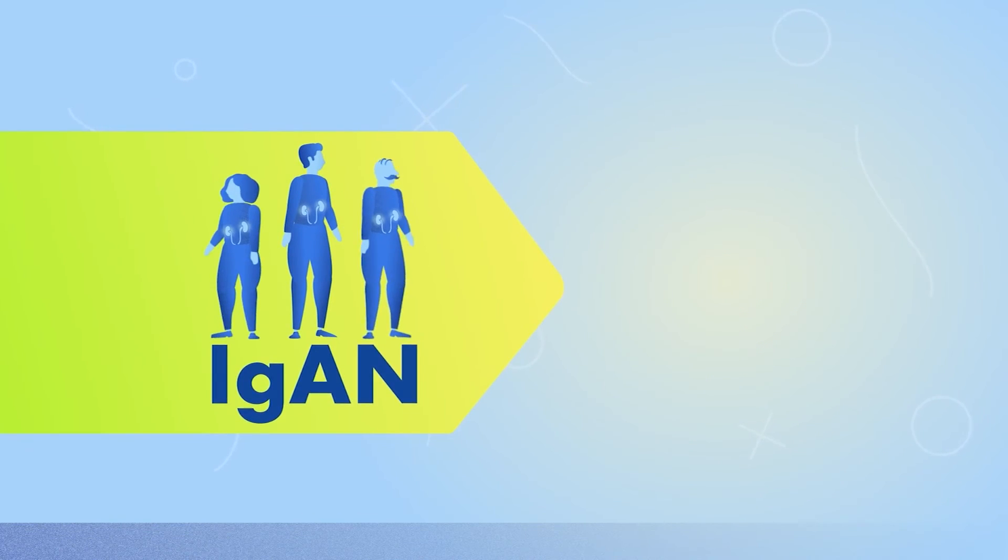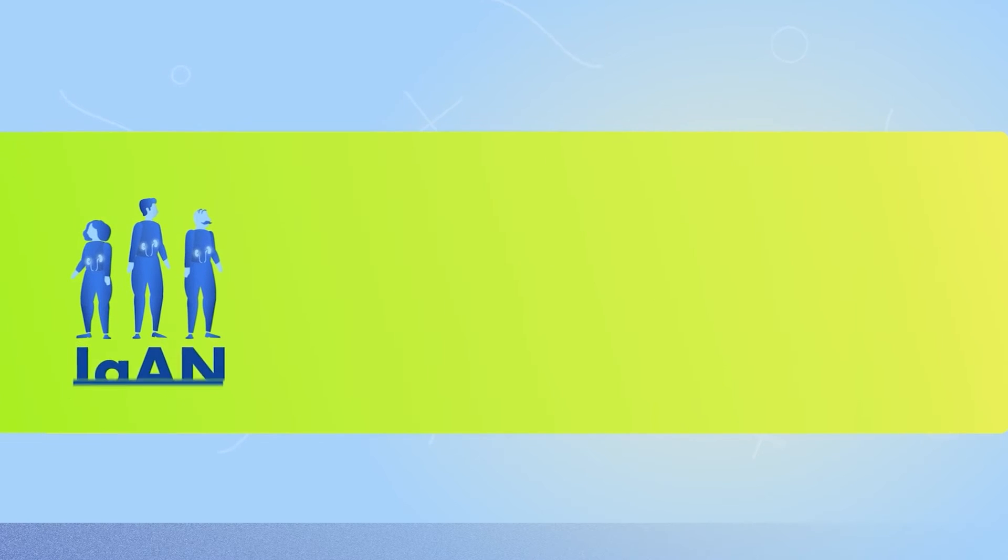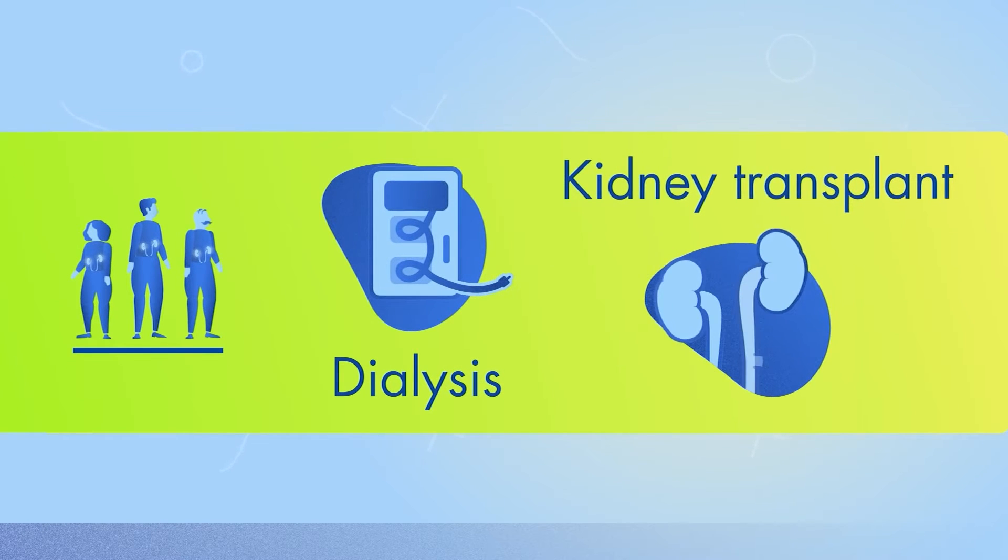In some people with IgAN, kidney function is reduced significantly over time. These people may need dialysis or a kidney transplant to live.